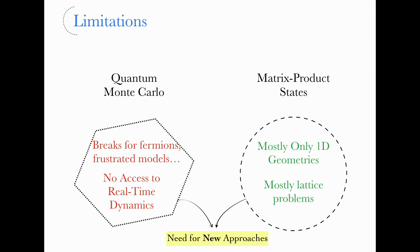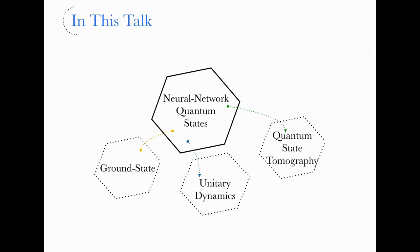We would like an approach that takes the best of both worlds: on one hand, the ability of quantum Monte Carlo to sample efficiently from the ground state or many-body state, and on the other hand, the ability of matrix product states and tensor networks to compress the wave function using regularity properties. During this talk I will try to convince you that a good way of doing so is by introducing a representation of the state based on artificial neural networks, and I'll show how we can use this to find the ground state, study unitary dynamics, and also address quantum state tomography.